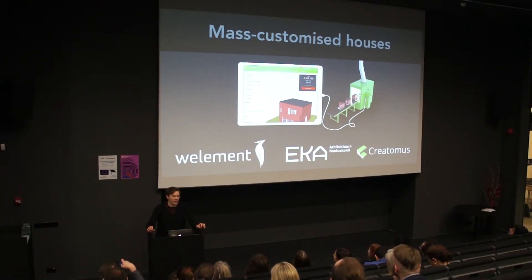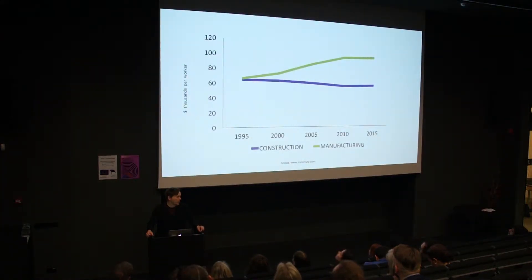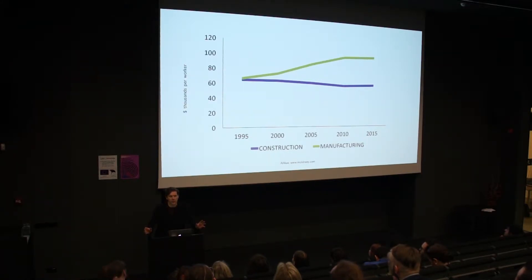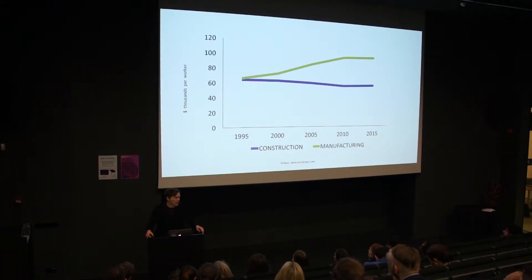What is mass-customized housing? Before I get to that, I want to talk about the underlying problem in the construction sector — its productivity. Compared to consumer product production, we're looking at productivity actually going down since 1995. If we think about the mass production of housing from the 60s — Lasnamäe, Mustamäe, Õismäe in Tallinn — productivity went up. But now it has gone down, and it also brings us very high housing prices.